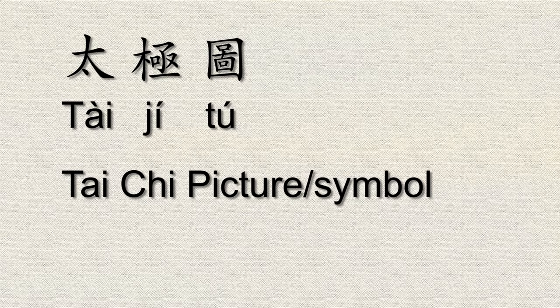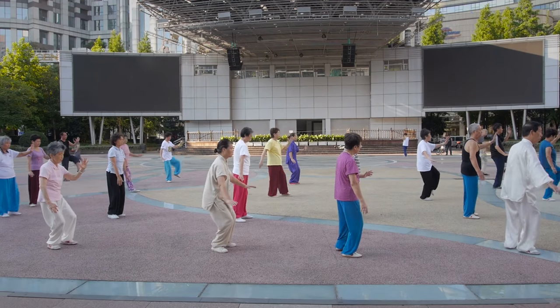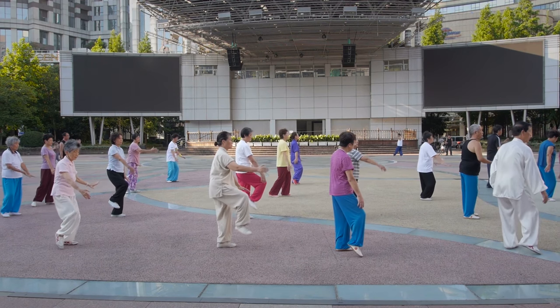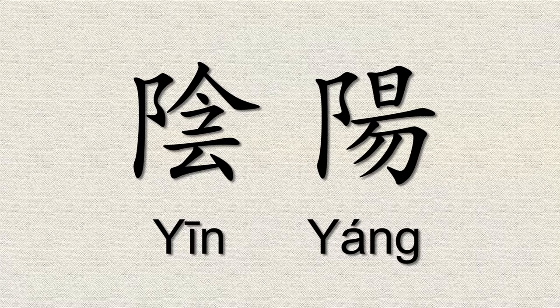The same tai-ji as in tai-ji boxing, or tai-chi as it's often called in Western countries. The idea of yin-yang refers to the two polarities: male and female, hot and cold, light and dark. The characters for yin and yang actually originate from characters meaning the sunny side of a hill and the shady side of a hill.